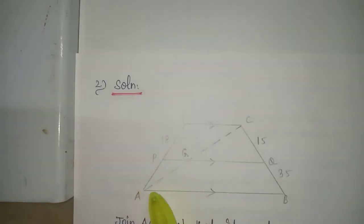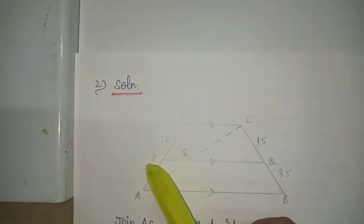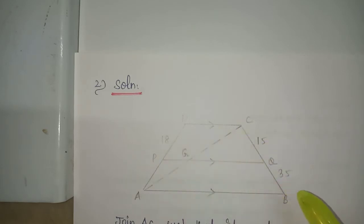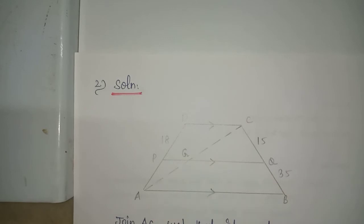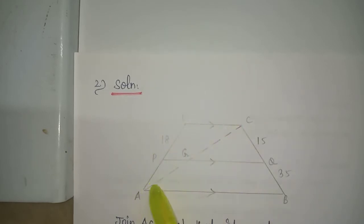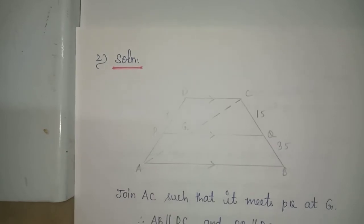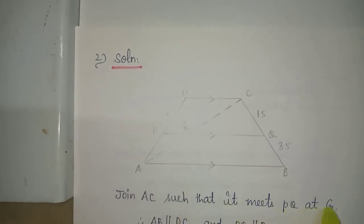Problem number 2 solution. In trapezium ABCD, PD is 18 cm, CQ is 15 cm and QB is 35 cm. We join the line from A to C, which meets PQ at point G. This gives us two triangles: triangle ADC and triangle ACB.